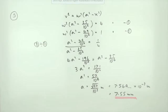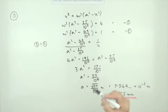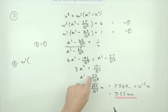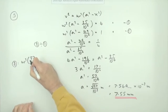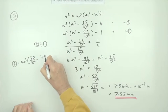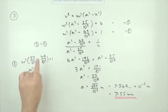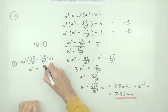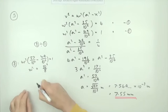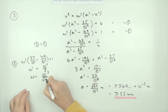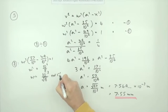To find ω, substitute a² = 57/10⁶ back into equation 2: ω²(57/10⁶ − 49/10⁶) = 1, so ω²(8/10⁶) = 1, giving ω² = 10⁶/8. Therefore ω = 10³/√8 radians per second.